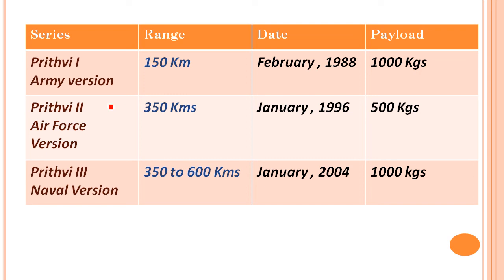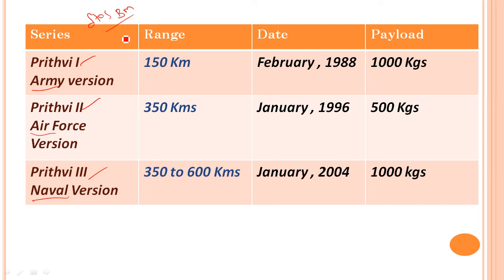The Prithvi series has three versions: Prithvi 1, Prithvi 2, and Prithvi 3 — for Army, Air Force, and Naval versions respectively. Prithvi is a short-range surface-to-surface ballistic missile. The range of Prithvi 1 is approximately 110 km, Prithvi 2 is 230 km, and Prithvi 3 is 350 km. Agni 1 can carry a warhead up to 1000 kg.